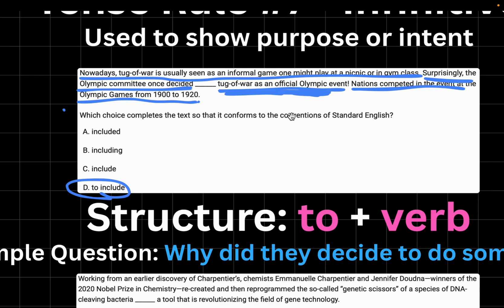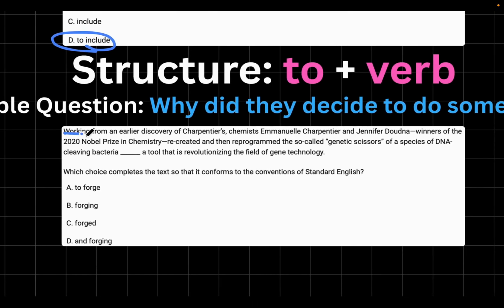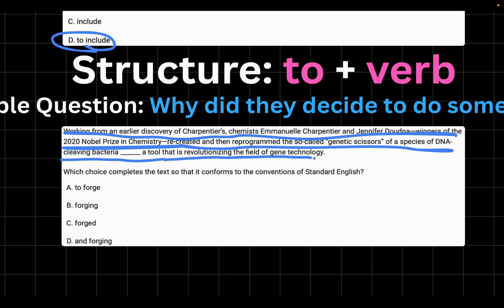Let me show you a much harder question. Working from an earlier discovery of Charpentier's, chemist Emmanuel Charpentier and Jennifer Doudna, winners of the 2020 Nobel Prize in Chemistry, recreated and then reprogrammed the so-called genetic scissors of a species of DNA cleaving bacteria, blank, a tool that is revolutionizing the field of gene technology. So let's try to sound out all of the choices. Choice A is to forge. It says recreated and then reprogrammed the so-called genetic scissors of a species of DNA cleaving bacteria to forge a tool that is revolutionizing the field of gene technology. Okay, yeah, that sounds right.